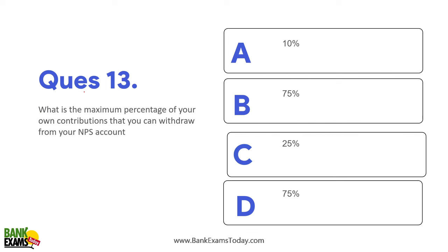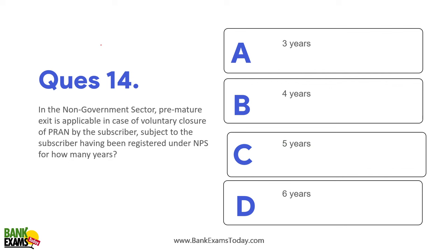What is the maximum percentage of your own contribution that can be withdrawn from your NPS account? We are talking about premature withdrawal — before the maturity period of the NPS account. If you withdraw your money before the age of 60, you can withdraw at most 25% of your own contribution. In the non-government sector, premature exit is applicable in case of voluntary closure of PRAN by the subscriber, subject to the subscriber having been registered under NPS for at least five years.